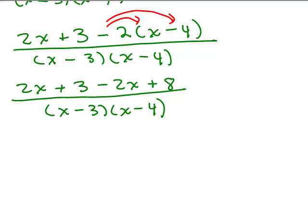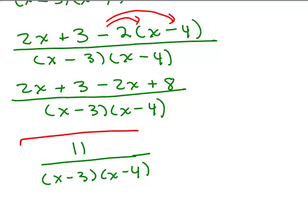What do I end up with here? I'm going to combine like terms up at the top, and I have a 2x minus 2x, so that's gone, 0. So 3 plus 8 is 11 over x minus 3 times x minus 4, and nothing cancels. 11 is prime, and so there we go.